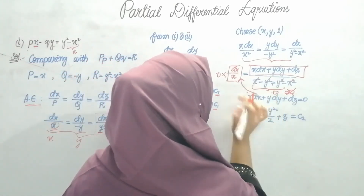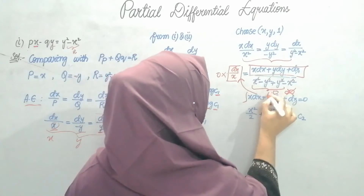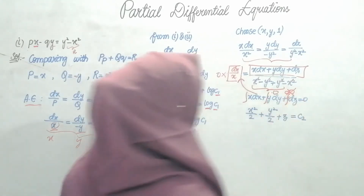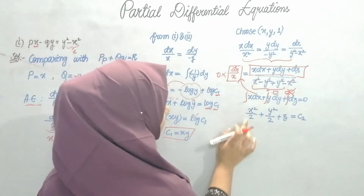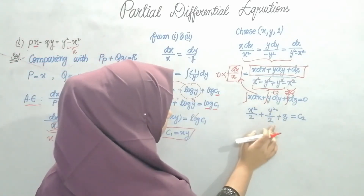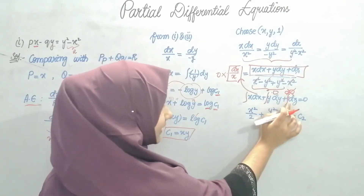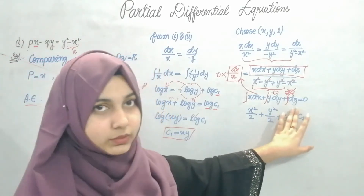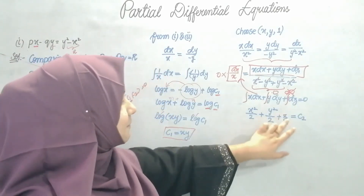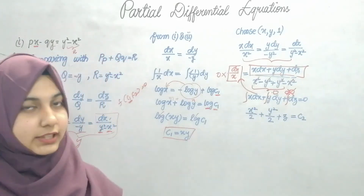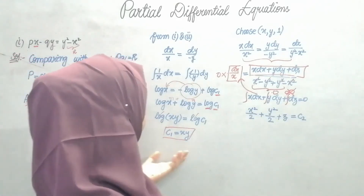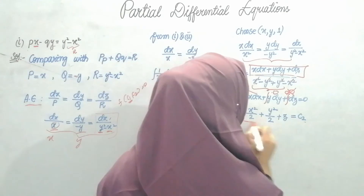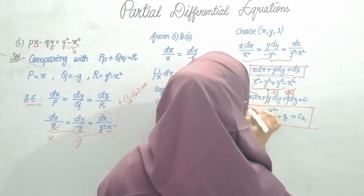Now integrating: ∫x·dx + ∫y·dy + ∫dz = 0, which gives x²/2 plus y²/2 plus z equals C2. So I have my C2 value.